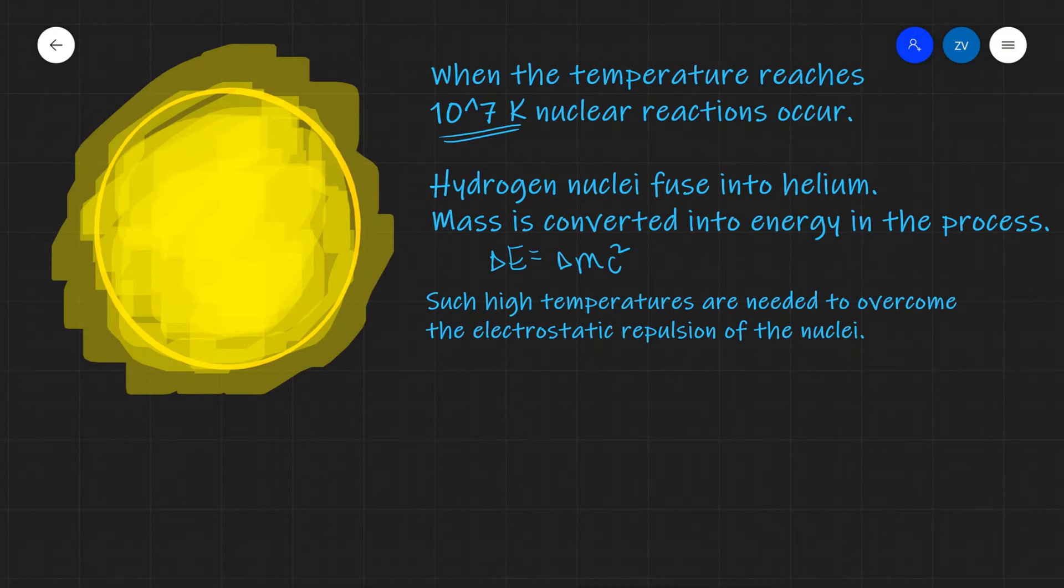Now, why do we need such high temperatures? Well, protons don't like each other. They repel. So we need incredibly high temperatures in order to overcome the electrostatic repulsion of the nuclei so that the protons can come close enough and they can fuse into helium.